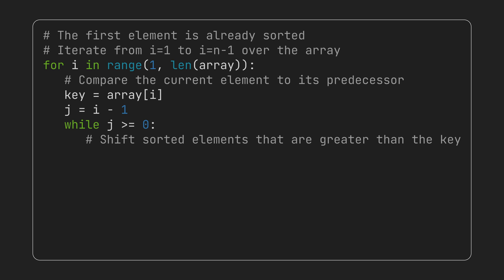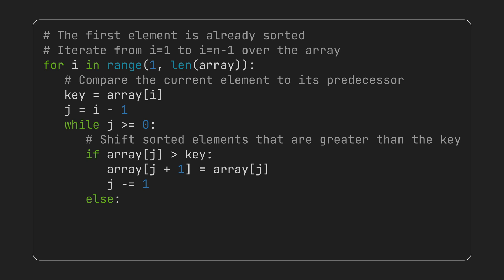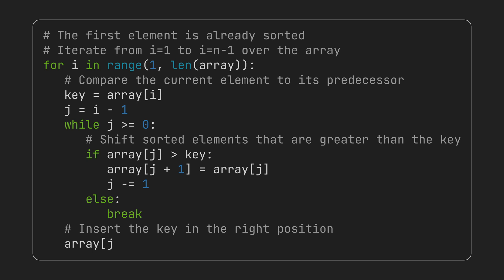Every time we find an item in the sorted part that's greater than the key, we shift that item one position to the right, making space for the key. Finally, when we find the correct position for the key item, we copy it to that index.